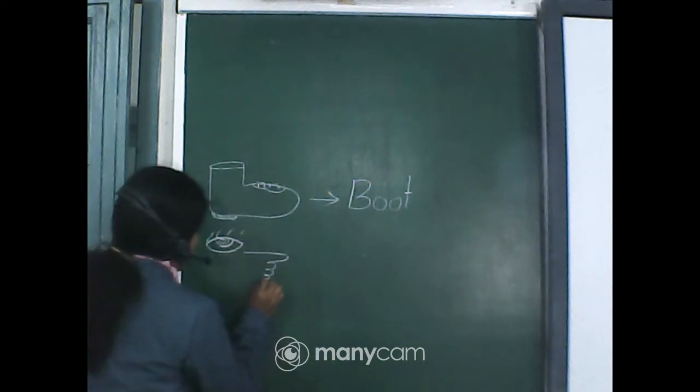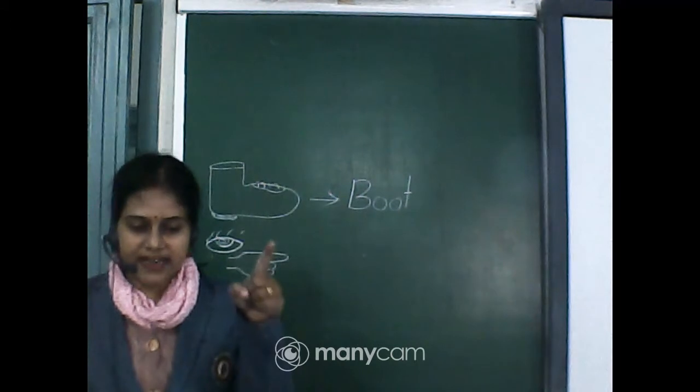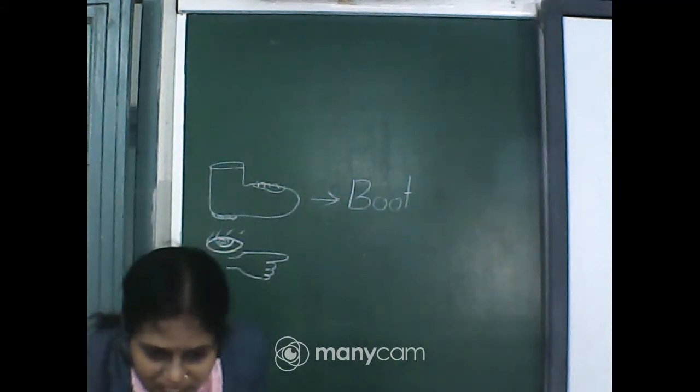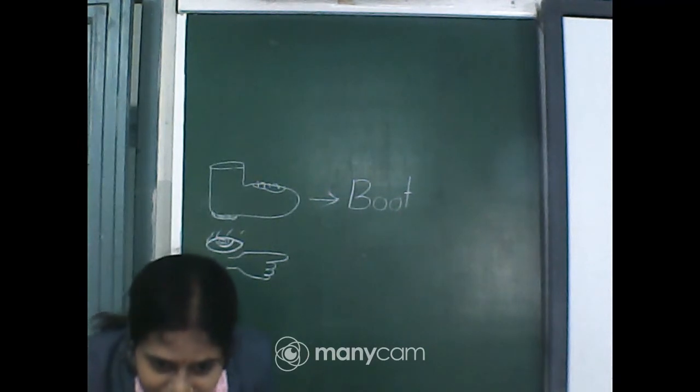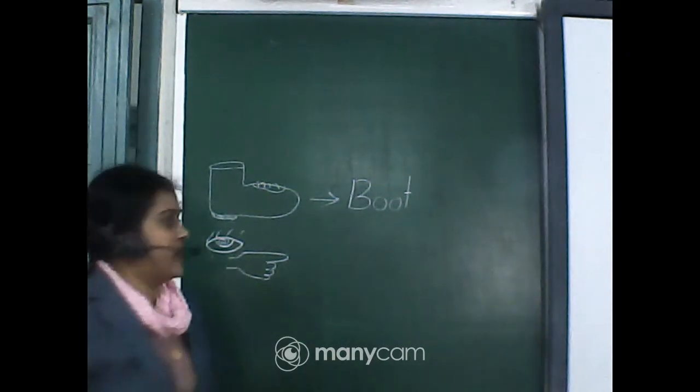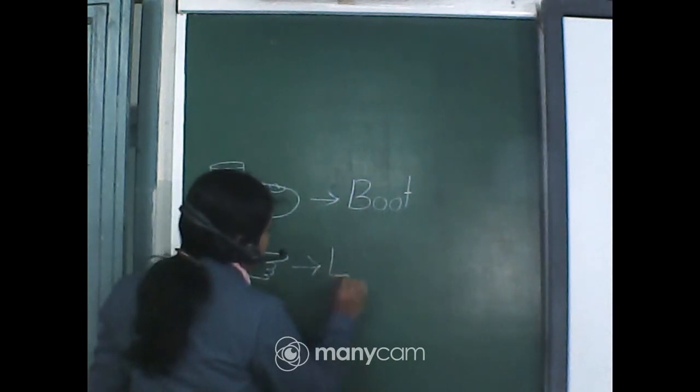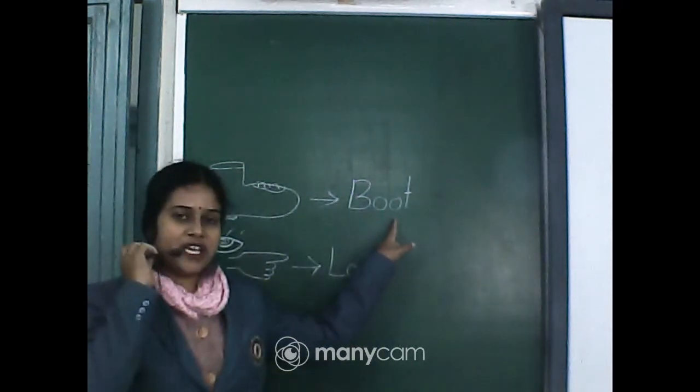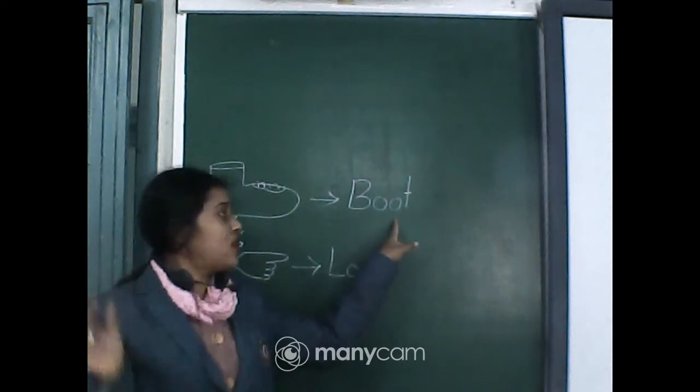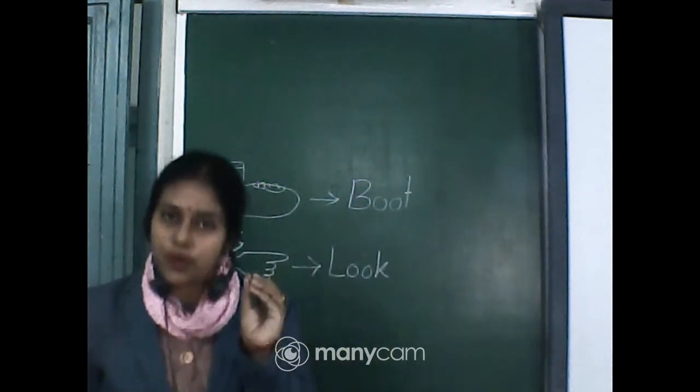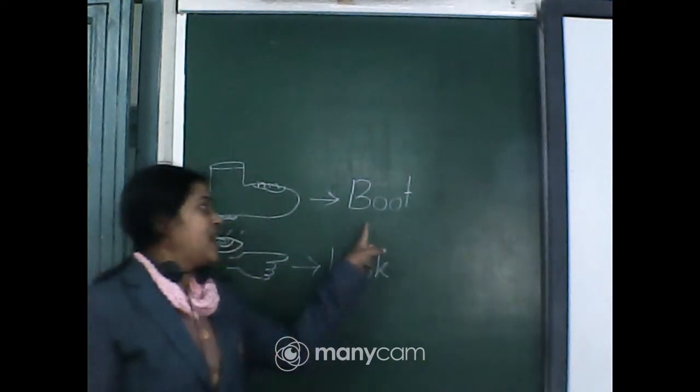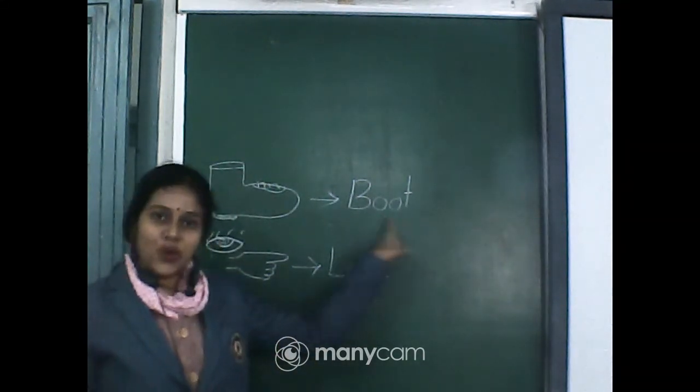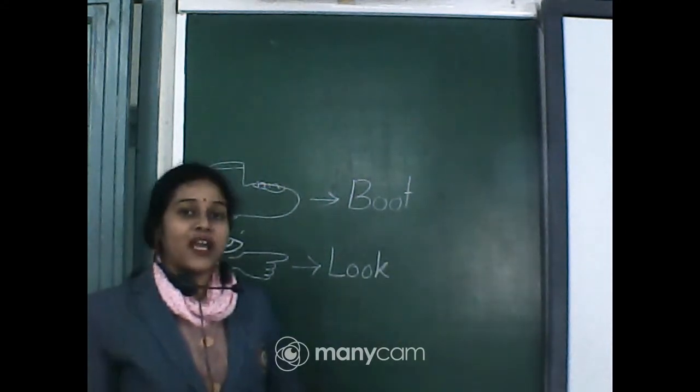Now, what this picture indicates? Eye and index finger. Yes, very good, Asmita, Simran, Shayan, it is look, very good, look, L-O-O-K, so B-O-O-T, boot, O, double O, single O sound is O, and double O, B-O-O-T, boot, long O, right, look, L-O-O-K, look.